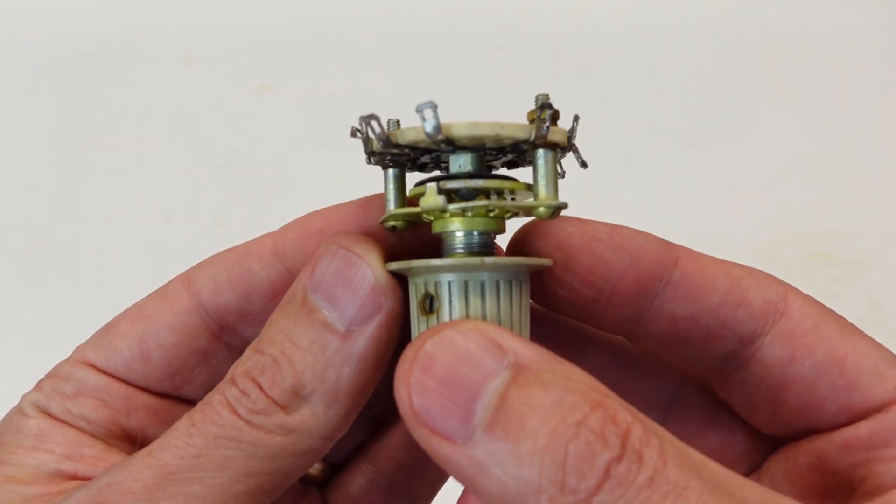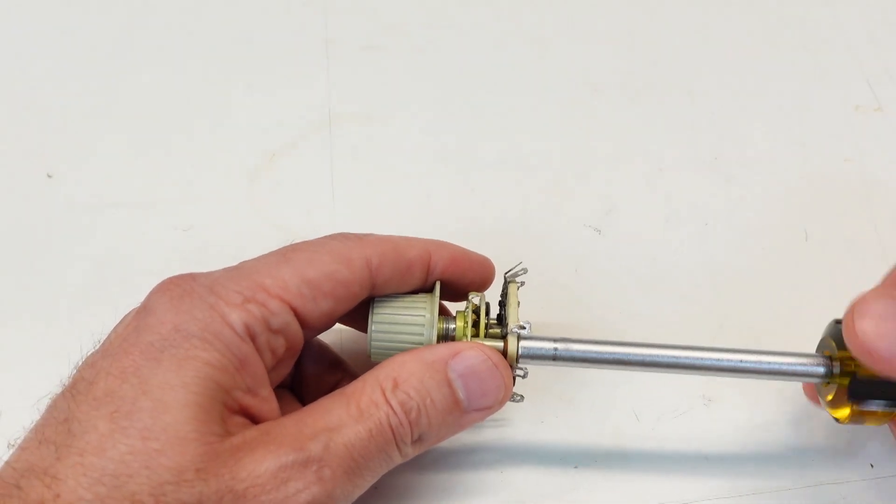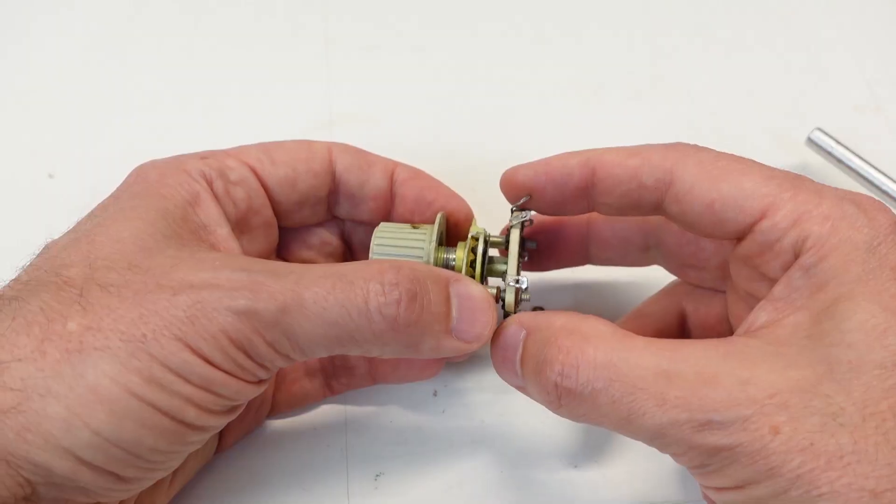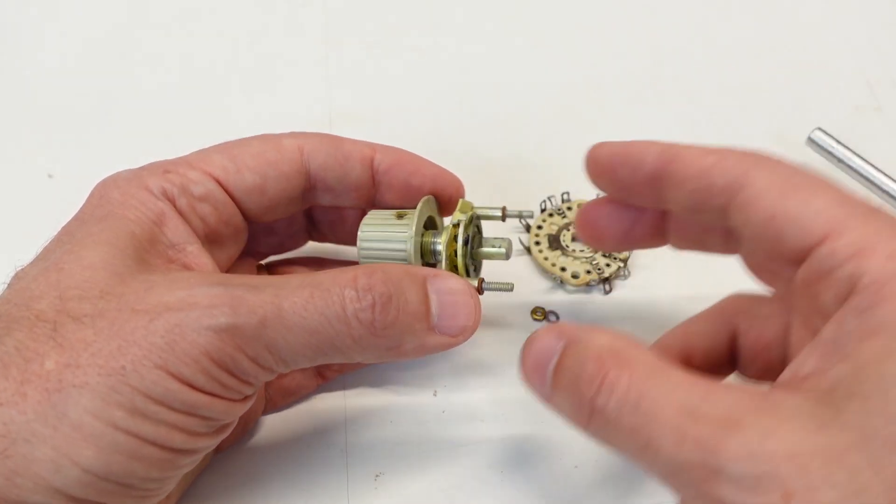That's a common problem with these old switches. There's various ways to fix them and the method I like to try first is to use some penetrating oil. It works best if you can soak the mechanical assembly in it for a few hours. So that means removing the switch deck, which is easy enough to do.